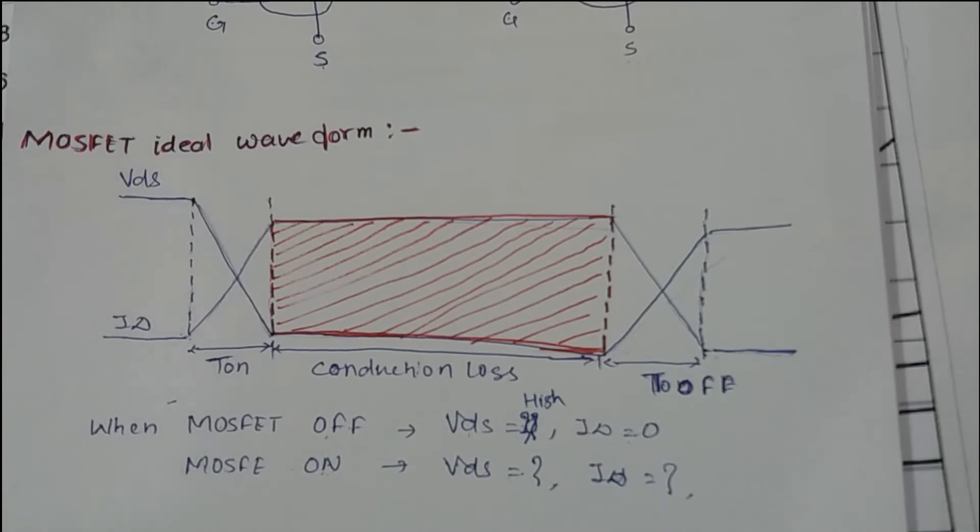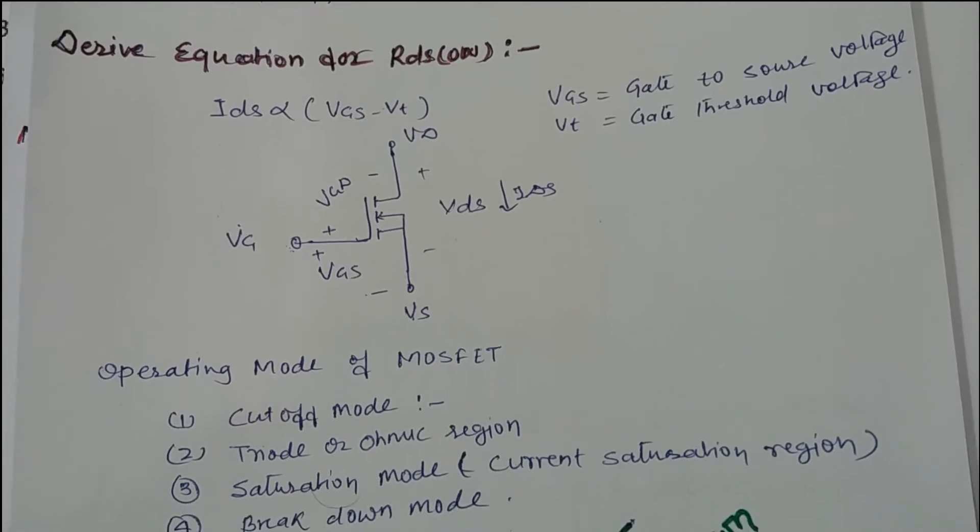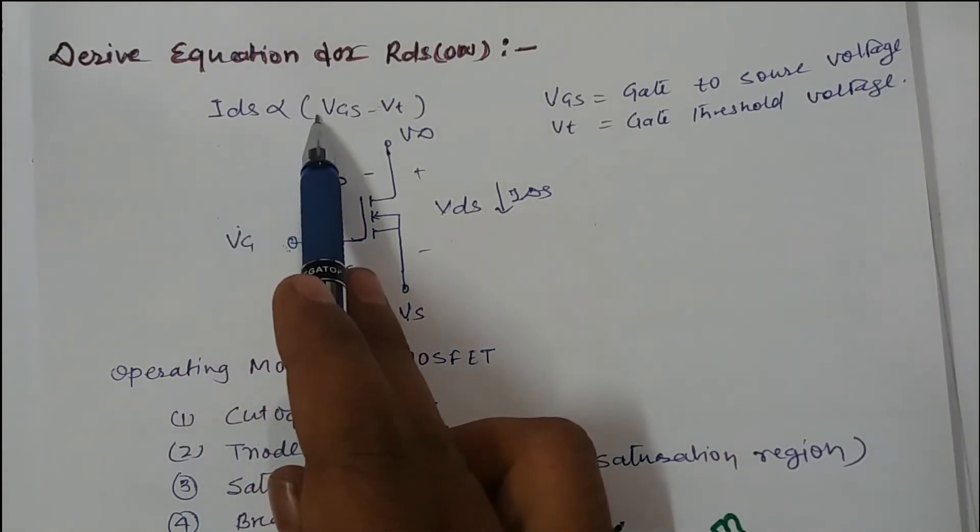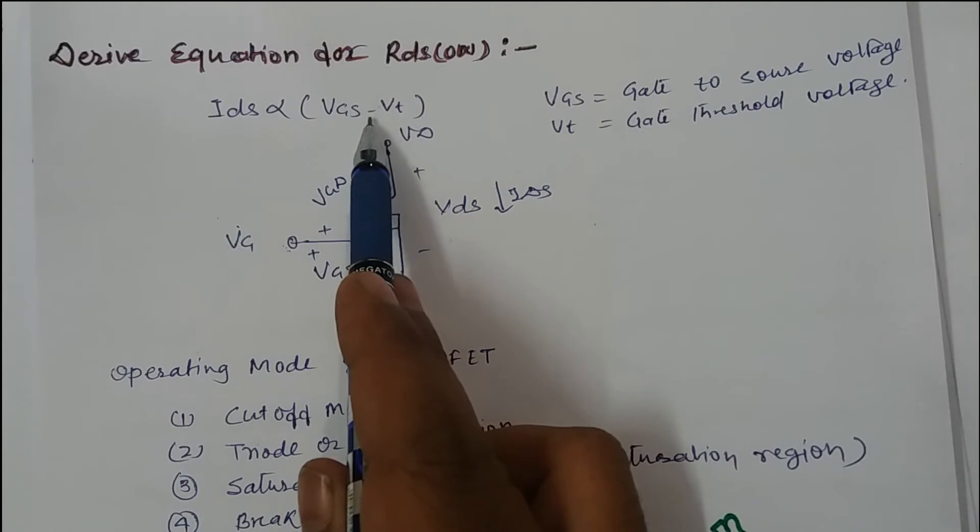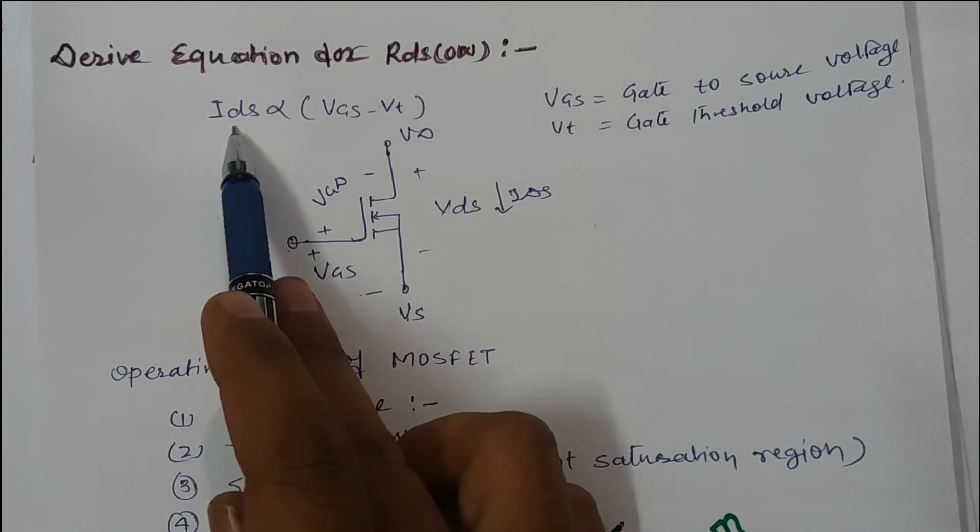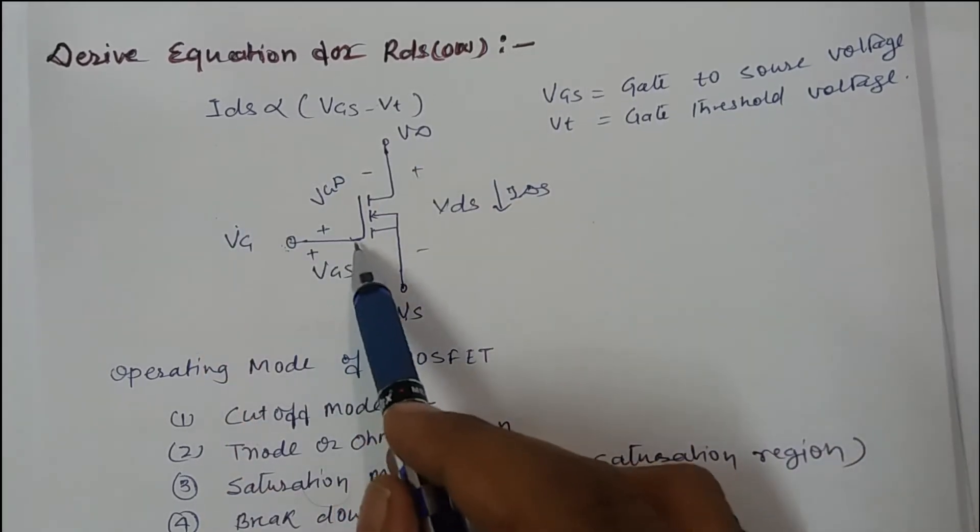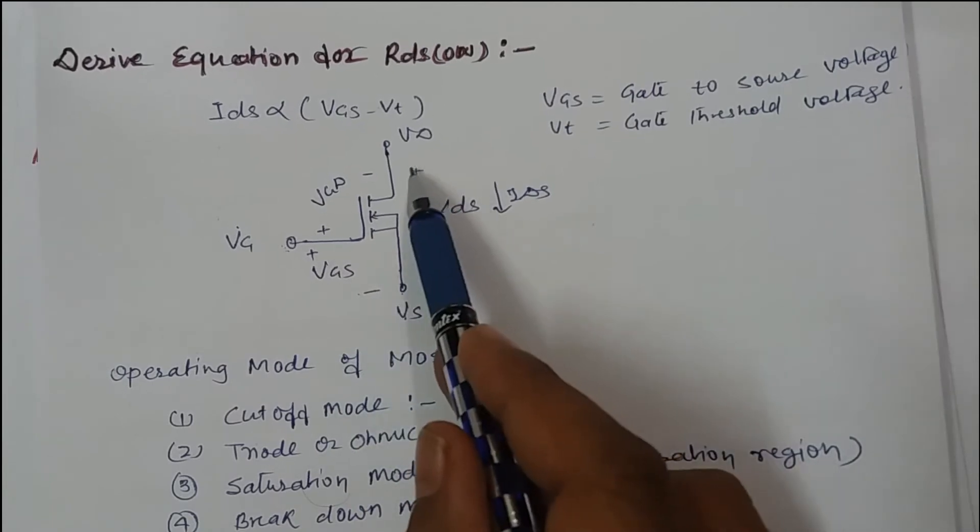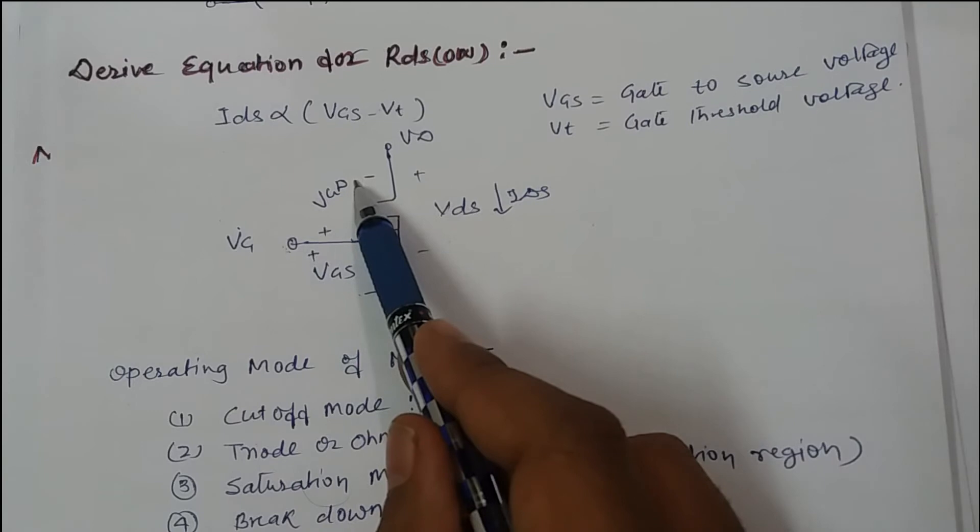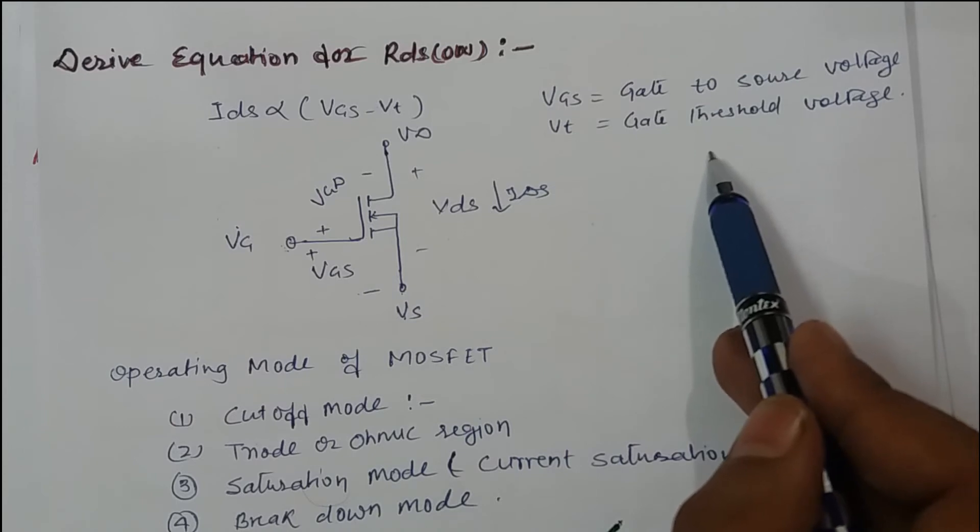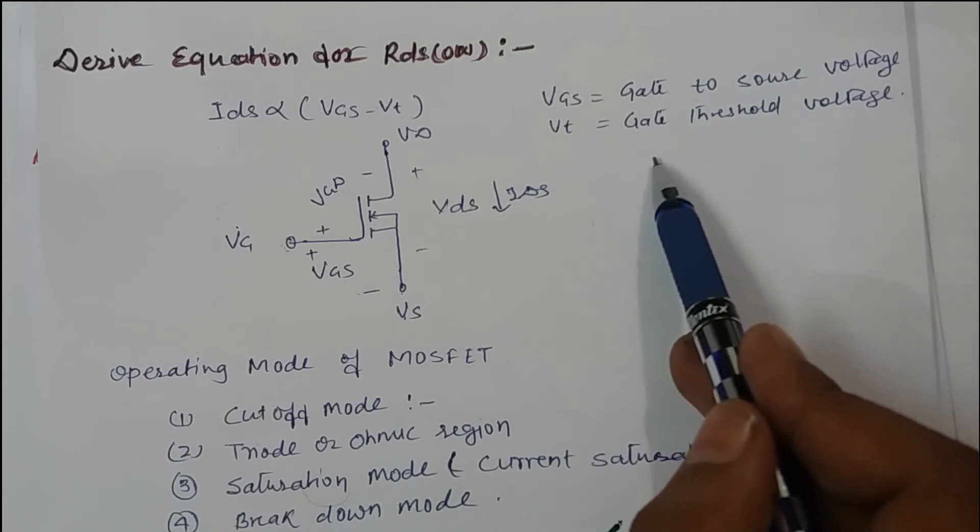So now let's derive the equation for RDS on. How to derive the equation for RDS on? Let's have a look. Actually, IDS is directly proportional to VGS minus VT. What does it mean? If you are applying more gate to source voltage, IDS drain current increases. Here I have drawn an N-channel MOSFET. This is gate voltage, this is source voltage, this is drain voltage. This is gate to source voltage, this is drain to source voltage, this is gate to drain voltage. And what is VT? It is gate threshold voltage or minimum voltage beyond which, if you apply more voltage beyond that voltage, channel forms and current starts flowing through it.